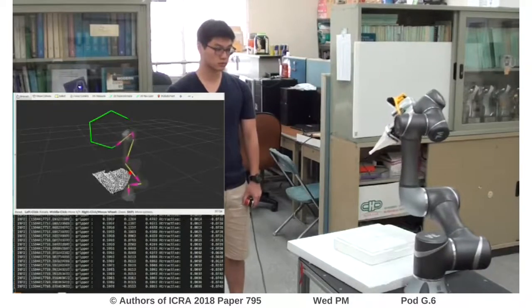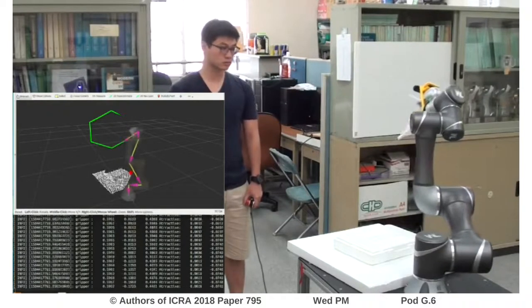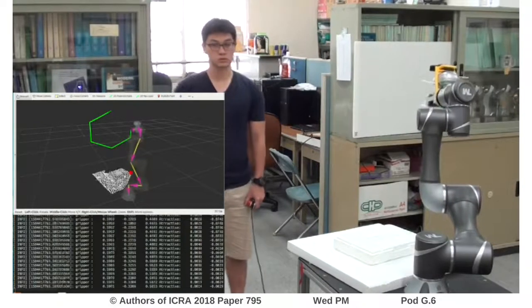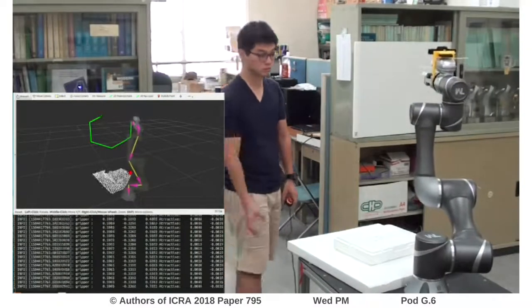With the newly generated joint velocities, the robot reconfigured its posture to continue avoiding the constraints while preserving the desired end effector trajectory.